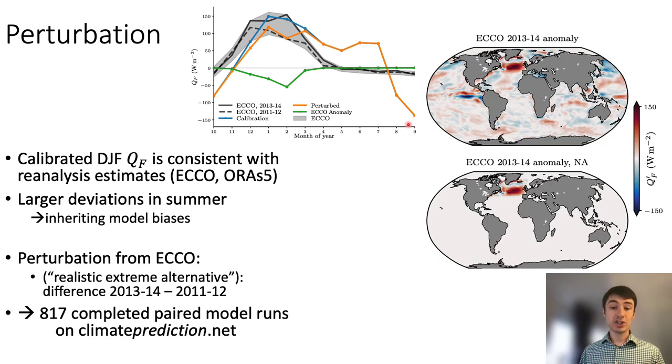Now we need a perturbation to our calibrated Q-flux. For this again, we turn to ECCO and look for a recent year that is most different from 2013-14. This turns out to be 2011-2012, and the difference between these two years is shown here in the top, again with the strong anomaly in the North Atlantic. We now generate our Q-flux perturbation by restricting this anomaly to the North Atlantic only, shown in the bottom panel, and subtracting it from our calibrated Q-flux. This then yields us the orange line with the perturbation shown in blue.